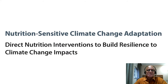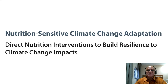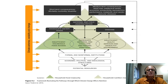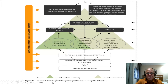All these approaches have to be shown to work at scale and be carbon neutral or even carbon negative in some cases. That leads us to think about nutrition-sensitive climate change adaptation — direct nutrition interventions to build resilience to climate change impacts. We will look at a schematic from the book showing the framework illustrating the pathways through which climate change affects nutrition.